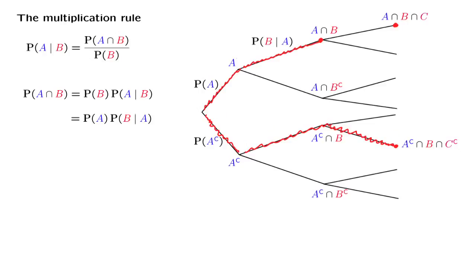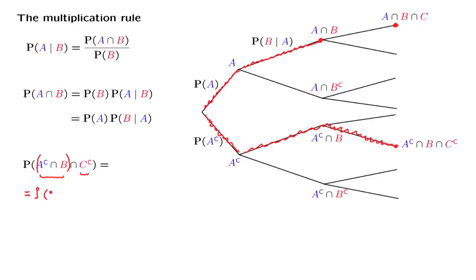What is the probability of this scenario happening? We try to do a calculation similar to the one used for the case of two events, but we need to deal here with three events. We look at the intersection of these three events and think of it as the intersection of a composite event — A complement intersection B — then intersected with the event C complement. After grouping things this way, we are dealing with the probability of two events happening, and the probability of two events happening is equal to the probability that the first event happens, times the probability that the second event happens given that the first one has happened.